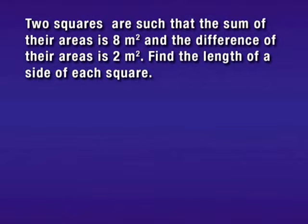Two squares are such that the sum of their areas is 8 square meters, and the difference of their areas is 2 square meters. Find the length of a side of each square.